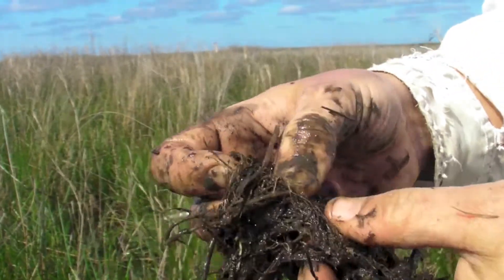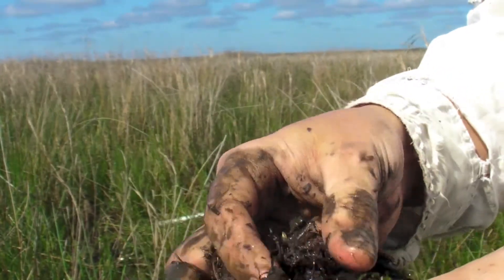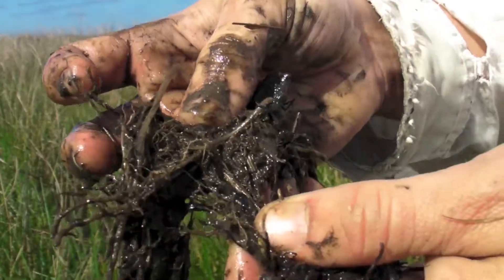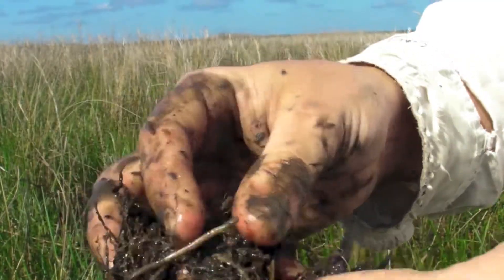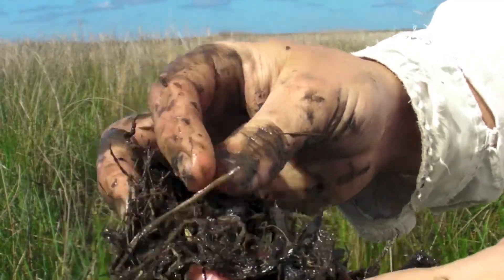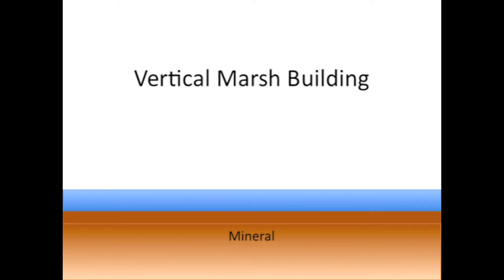A lot of the soil volume is comprised of plant material — roots, rhizomes, and shoot bases. During vertical marsh building, alternating deposits of mineral material and organic material accumulate over time.